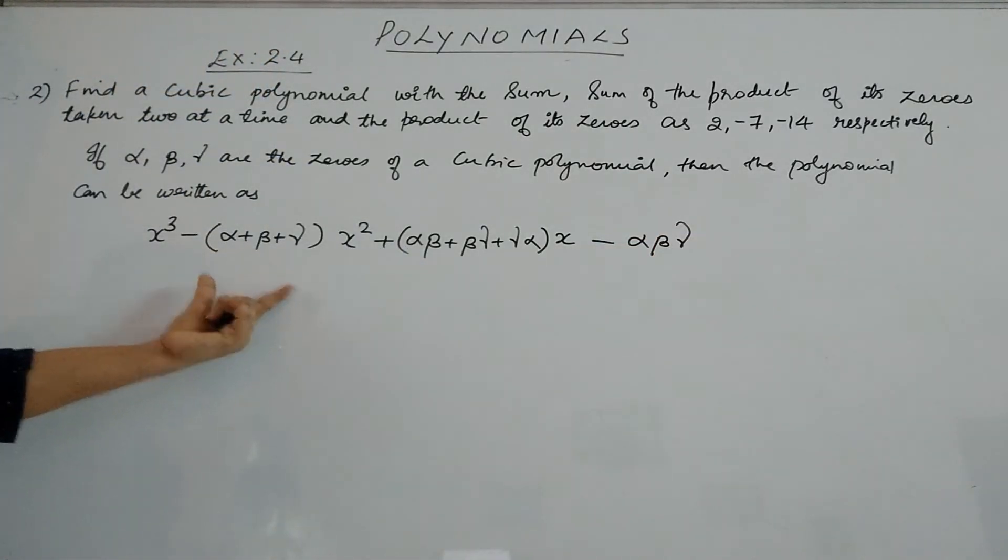This is the method to write a cubic polynomial when α, β, γ are the zeros.